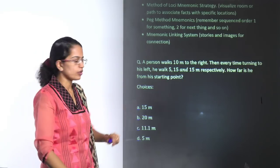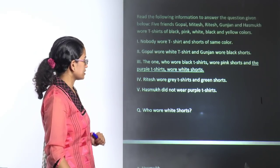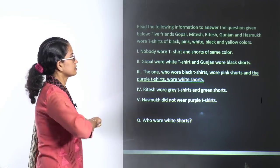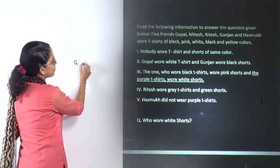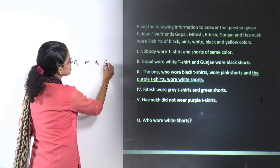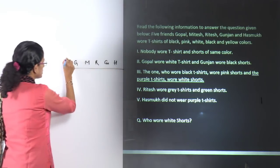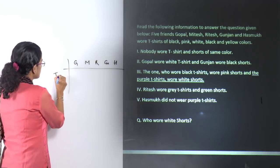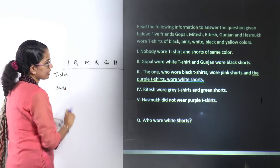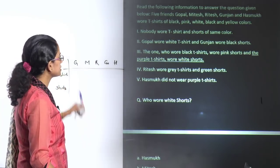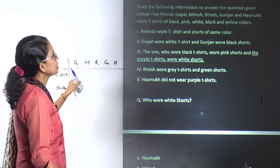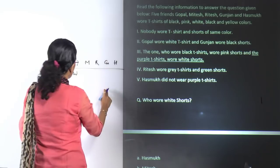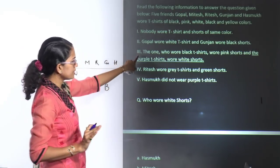The next is a very interesting analytical reasoning question. You have five friends — Gopal, Mitesh, Ritesh, Gunjan, and Hasmuk — wearing t-shirts and shorts. The first statement says none of them wear the same color of t-shirt and shorts. Gopal wears a white t-shirt, Gunjan wears black shorts, and Ritesh wears a gray t-shirt and green shorts.